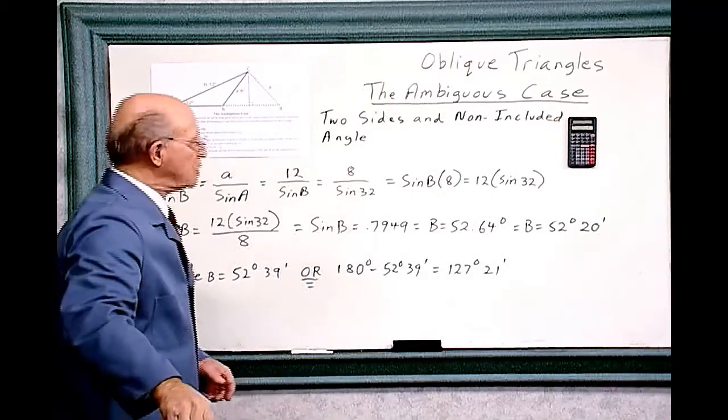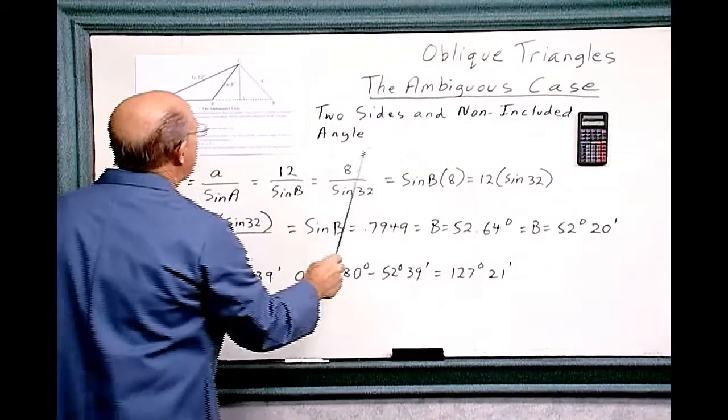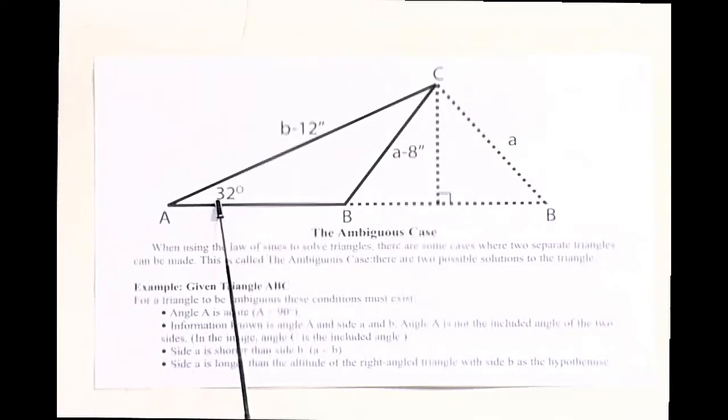Let's look at this diagram. Here are the two sides: B equals 12 inches and A equals 8 inches. It's not this angle, it's a non-included angle that's over here. And that's angle A, 32 degrees.